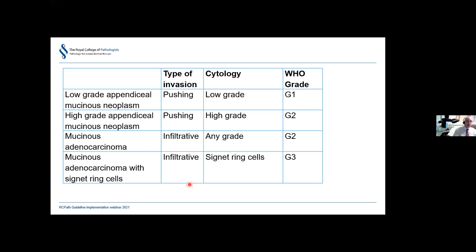How should we classify mucinous tumours of the appendix? There are four main groups: LAMNs (low-grade appendiceal mucinous neoplasms), HAMNs (high-grade appendiceal mucinous neoplasms), mucinous adenocarcinoma, and mucinous adenocarcinoma with signet ring cells. Classification into these groups depends on the type of invasion and the cytology. Pushing invasion places a tumour as LAMN or HAMN depending on cytology, while infiltrative invasion defines adenocarcinoma by definition.